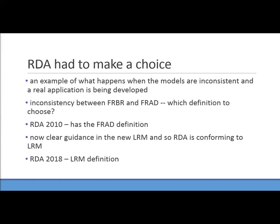This is a perfect example of what happens when models are inconsistent and somebody is developing a real application such as RDA. RDA had to make a decision — which definition of person to take, the FRBR one or the FRAD one — and they went with the FRAD one. Now LRM has stated that the definition of person is a real individual, and RDA must change its definition of person to align with LRM in order to maintain consistency with an internationally accepted bibliographic conceptual model.